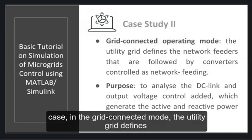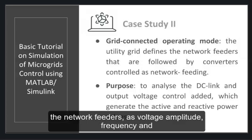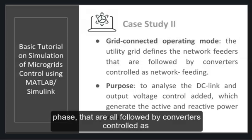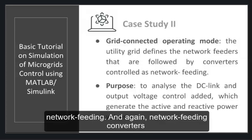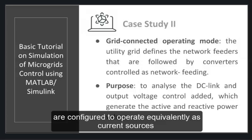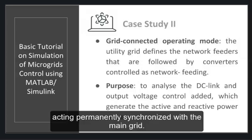As stated in the first case, in the grid-connected mode, the utility grid defines the network feeders as voltage amplitude, frequency and phase, that are all followed by the converters controlled as network feeding. And again, network feeding converters are configured to operate equivalently as current sources, acting permanently synchronized with the main grid.